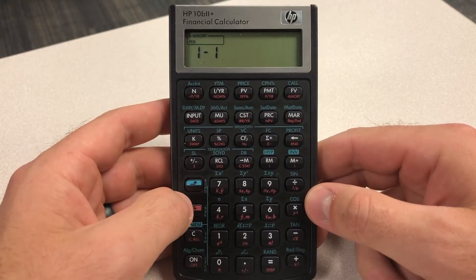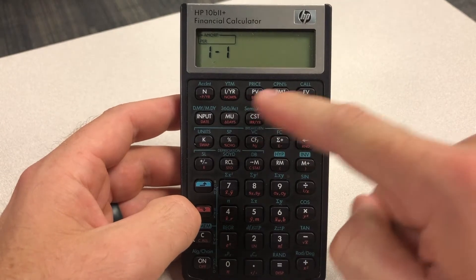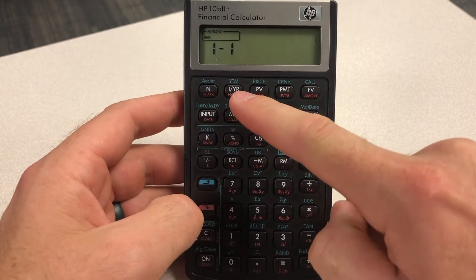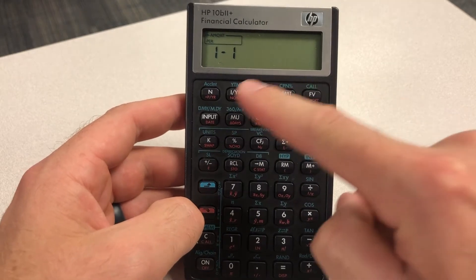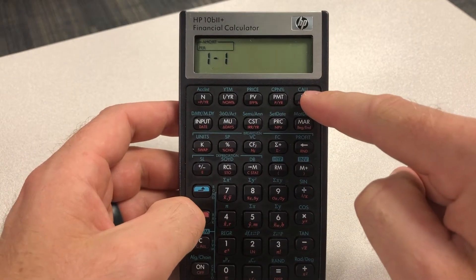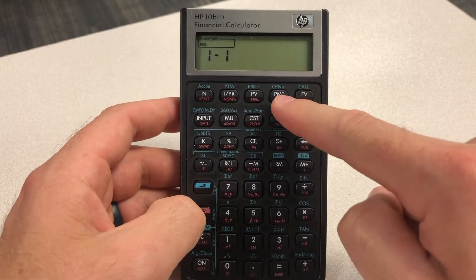What we have here is within the time value of money buttons. We have periods per year, interest per year, present value, payment, future value. These are the buttons we're going to use to input our data to calculate our payment.